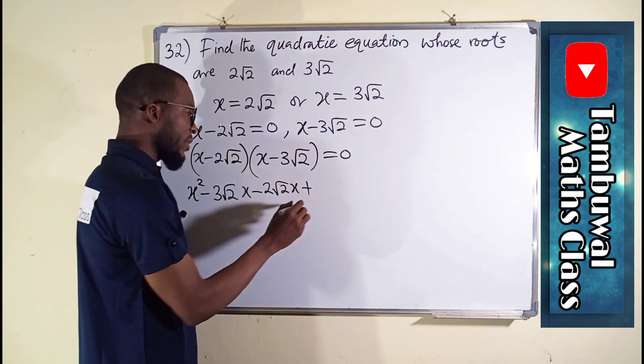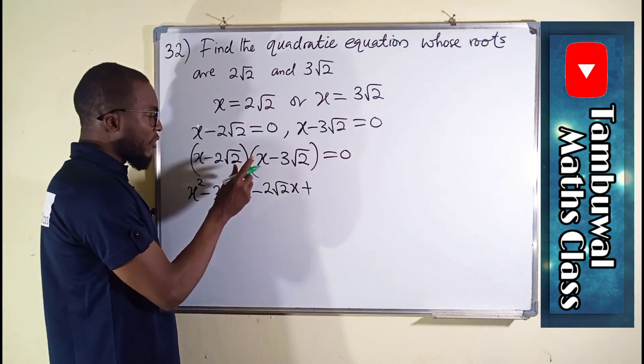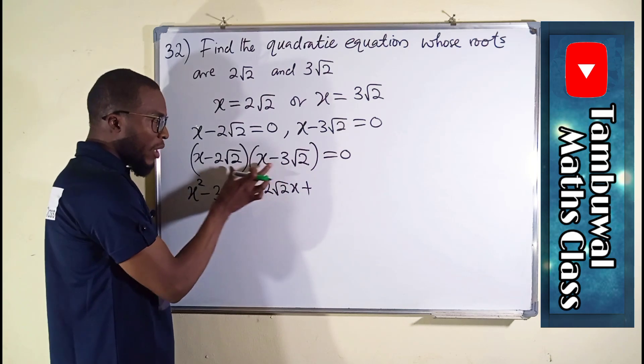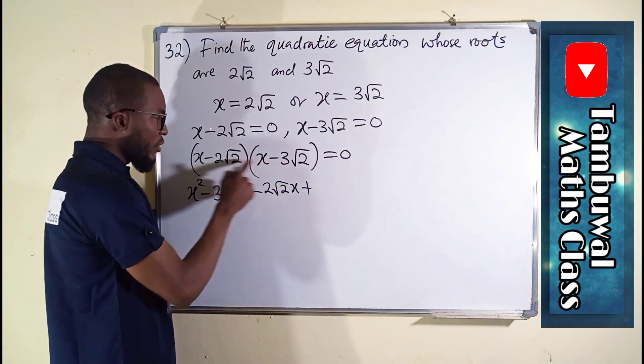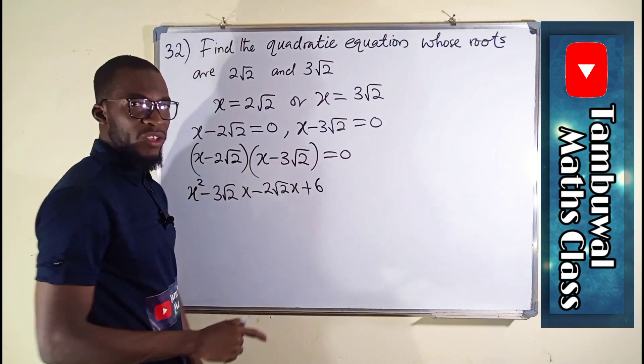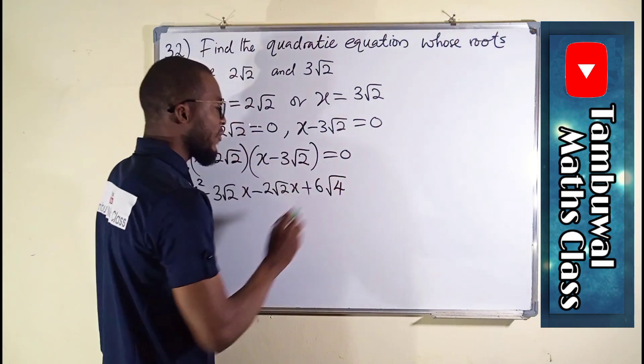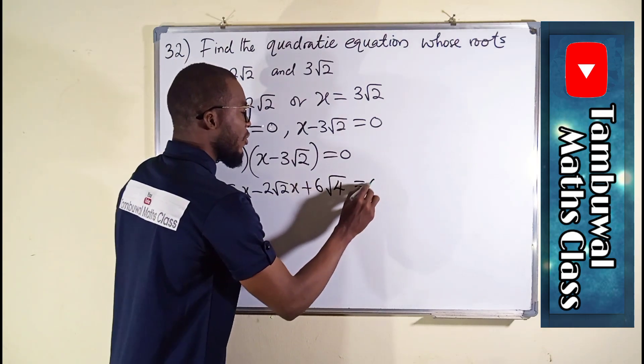2√2 multiplied by x for this and this. Minus times minus is plus. You know roots can multiply themselves, so we are going to say number by number, root by root. 2 times 3 is 6. The √2 times √2 is √4, because 2 times 2 is 4. The whole of this equal to zero.